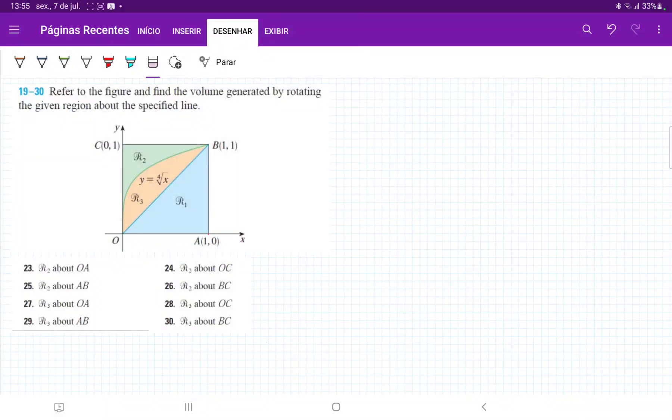So for number 26, we want to take R2, which is this green area, and rotate it about the line BC. When we rotate it, we're going to have a bunch of circles that give us this kind of horn-shaped volume.